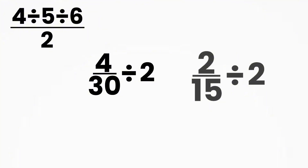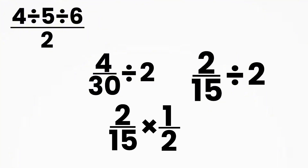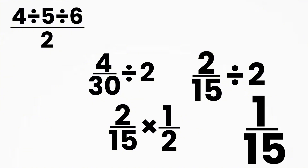Now we have 2 over 15 divided by 2. Again, use the KCF rule. Keep 2 over 15, change divide to multiply, and flip 2 to become 1 over 2. Now multiply: 2 times 1 equals 2, and 15 times 2 equals 30. That gives 2 over 30, which simplifies to 1 over 15.